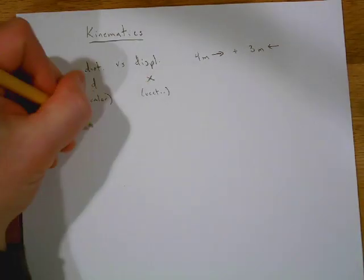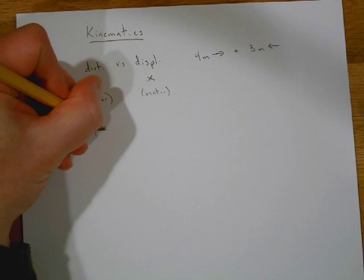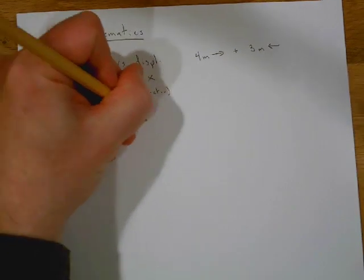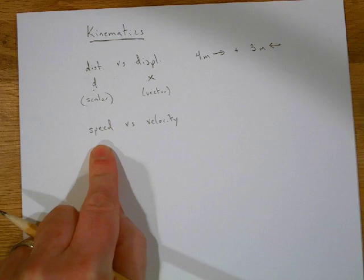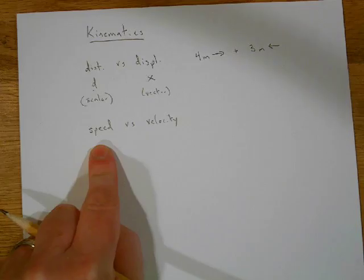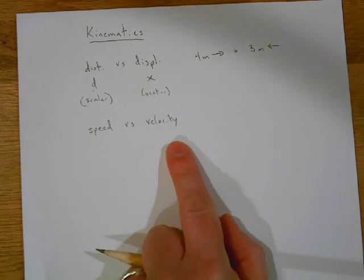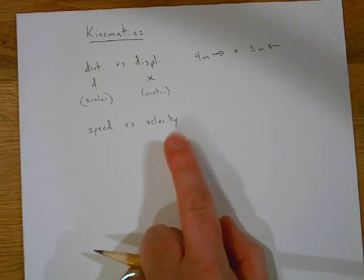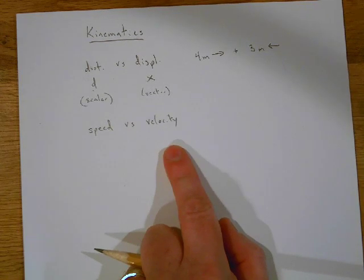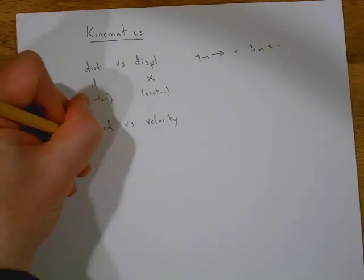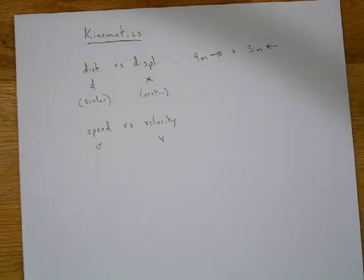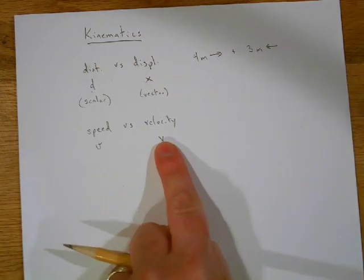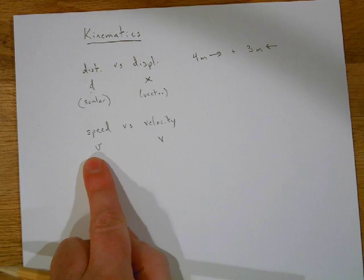Make sure you understand the difference between speed and velocity. Speed is just how fast you're going. Velocity is how fast you're going plus the direction you're going. Speed uses a script V, where velocity is just a regular V. Velocity is your vector; speed is your scalar.